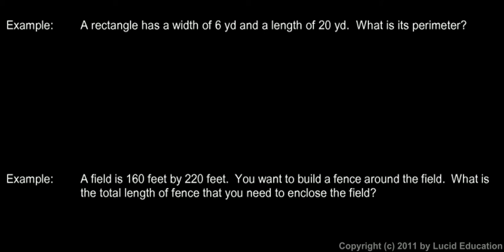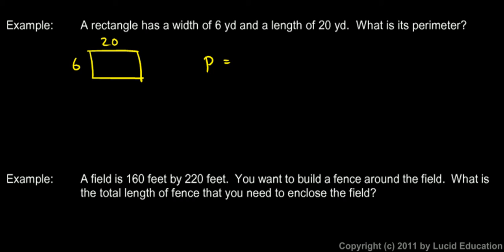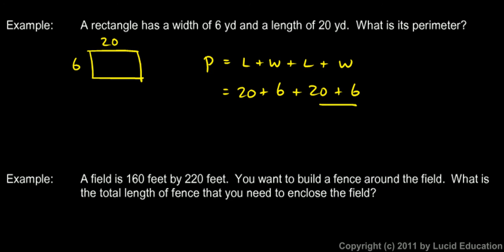Now we'll look at some examples we can solve using that formula for the perimeter of a rectangle. In this first one, a rectangle has a width of 6 yards and a length of 20 yards. What is the perimeter? Sometimes it helps to draw a picture. We draw a little rectangle with a width of 6 and a length of 20. The perimeter is L plus W plus L plus W: 20 plus 6 plus 20 plus 6. I can see 26 plus 26 adds up to 52. Both are in yards, so the answer is 52 yards.